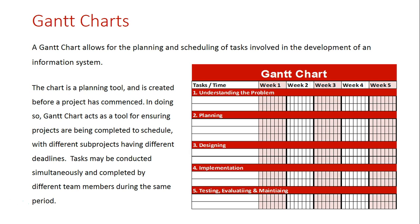Let's see how we can use this blank Gantt chart to actually schedule our tasks. In the understanding the problem stage, we may decide we're going to interview two participants and develop the required report. Those two things will likely be occurring side by side, so the Gantt chart will reflect that. In the planning stage, we will update the requirement report, maybe develop a requirements prototype, and conduct a feasibility study.